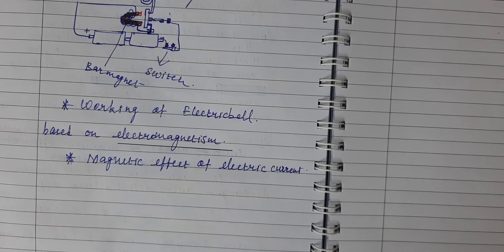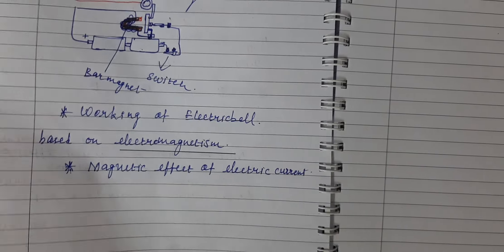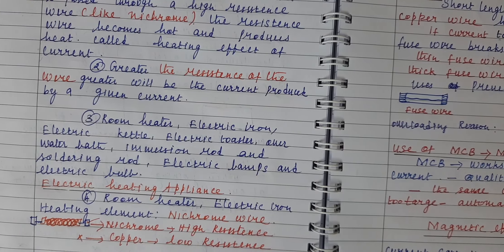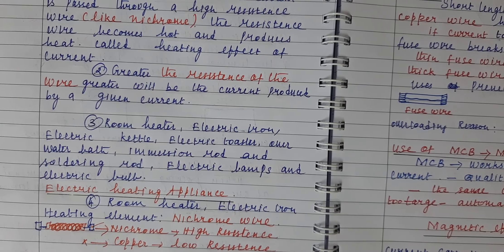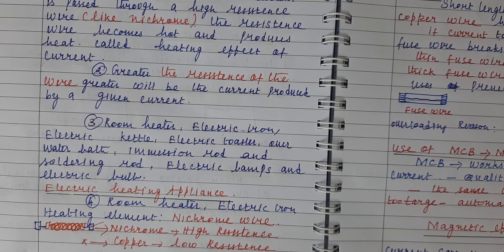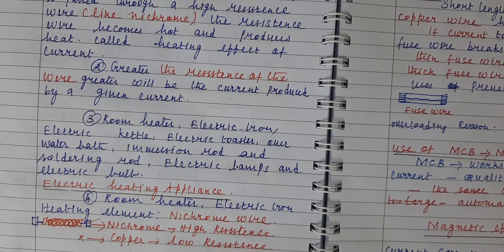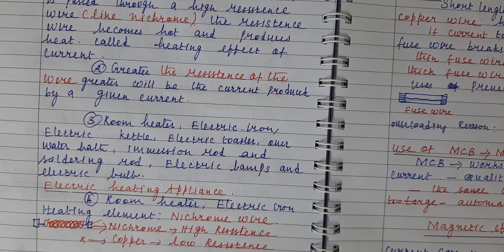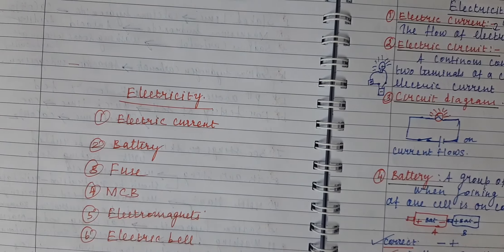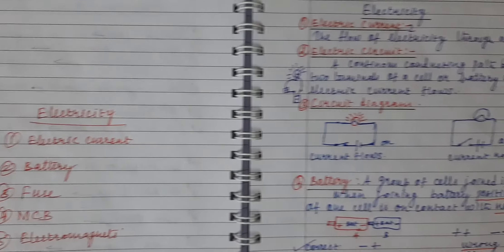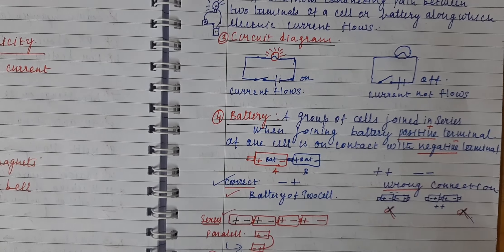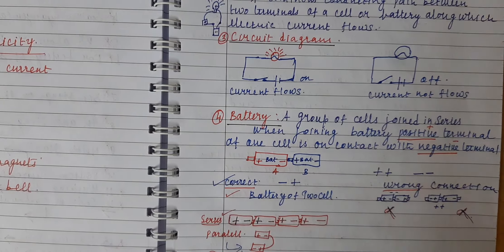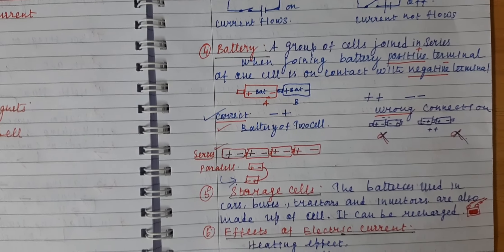Summary of key points: the magnetic effect of electric current; fuse wire is thin, made up of thin plated copper wire with high resistance; electromagnetic property; nichrome possesses high resistance; the circuit has on and off positions; batteries are opposite-charged; and storage cells can be recharged and are used in automobiles.